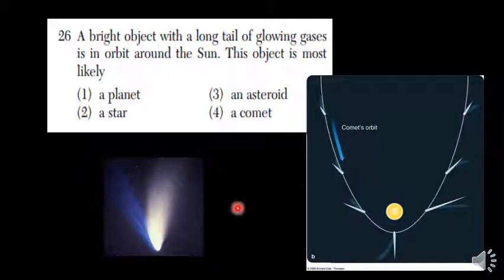Now, the thing to remember is these tails always point away from the sun because the solar wind is pushing outwards from the sun.